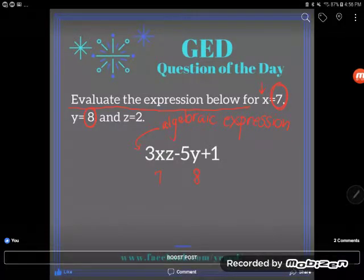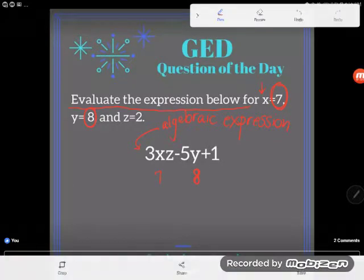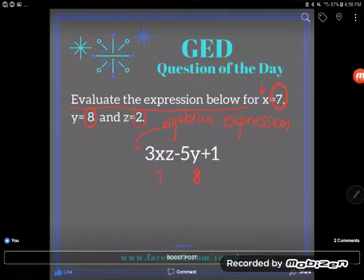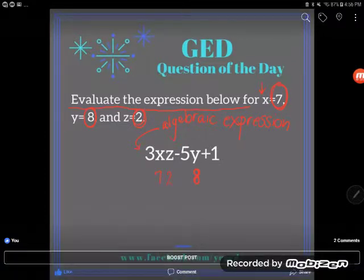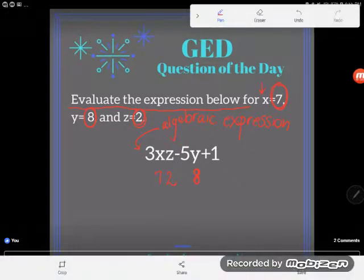So right underneath that y I'm going to put an 8. Okay, and I can see that z is 2, so where I once had z I'm going to put a 2. Now we have to talk about this 7 and this 2 which are currently shoved up next to each other with nothing in between them.